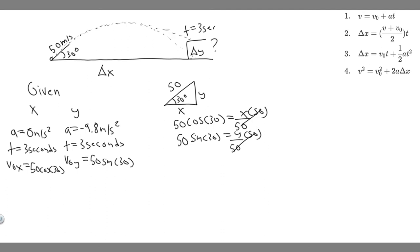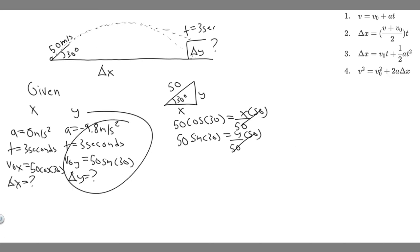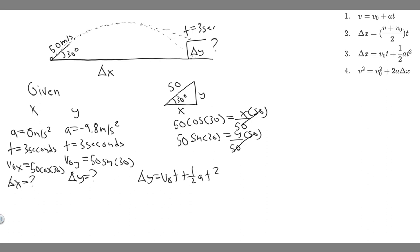Now we have the acceleration, time, and initial velocity for both directions. What we want to find is delta x and delta y. We'll solve these independently using the kinematic equation: delta x or y equals v₀ times t plus one-half a t squared. Let's start with y.